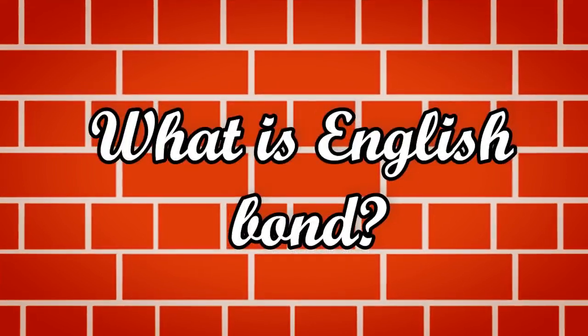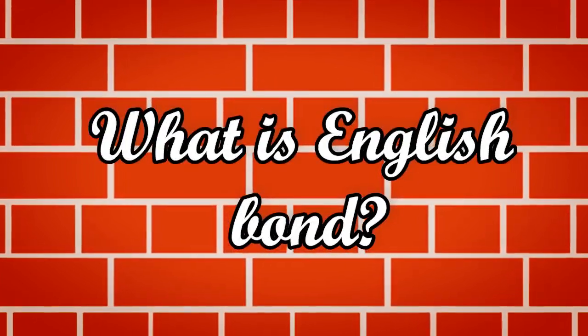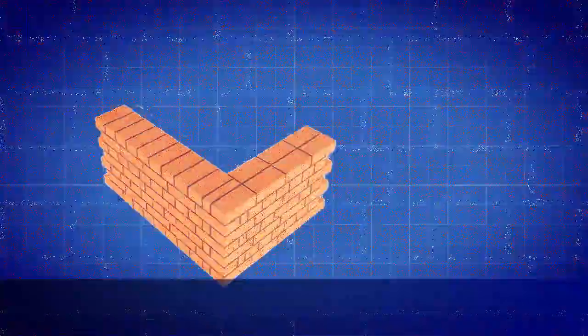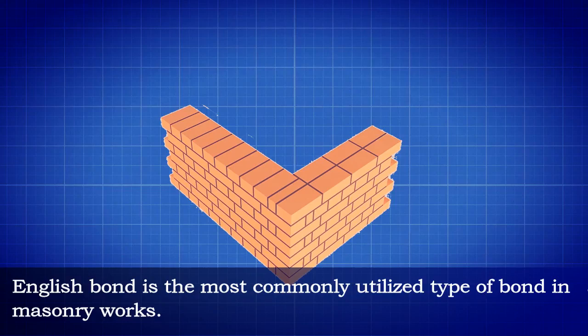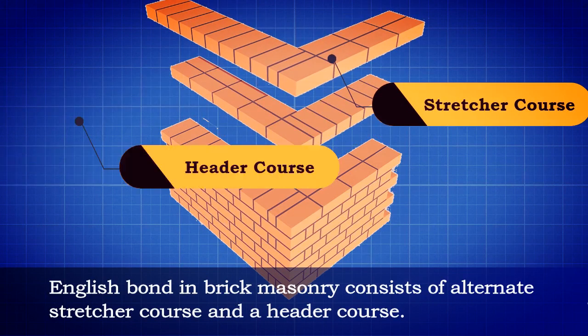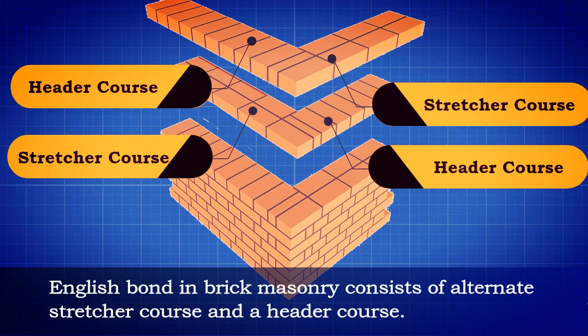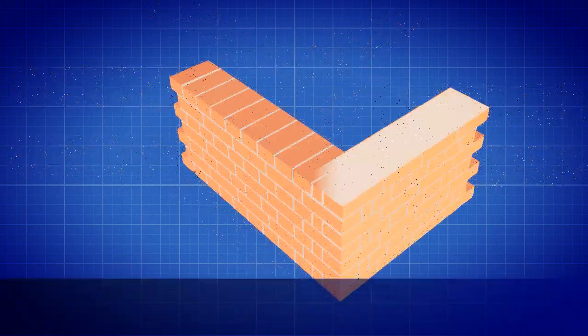What is English bond? English bond is the most commonly utilized type of bond in masonry works. English bond in brick masonry consists of alternate stretcher courses and header courses.